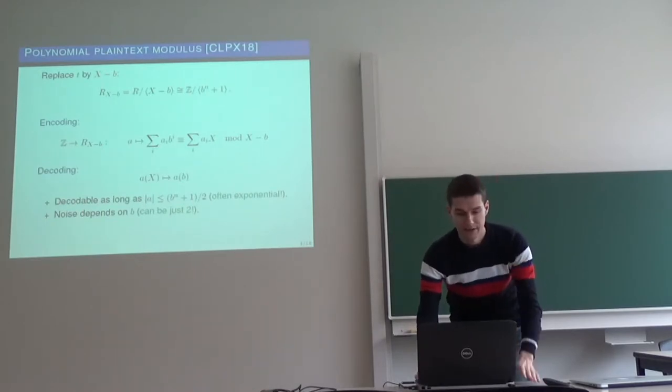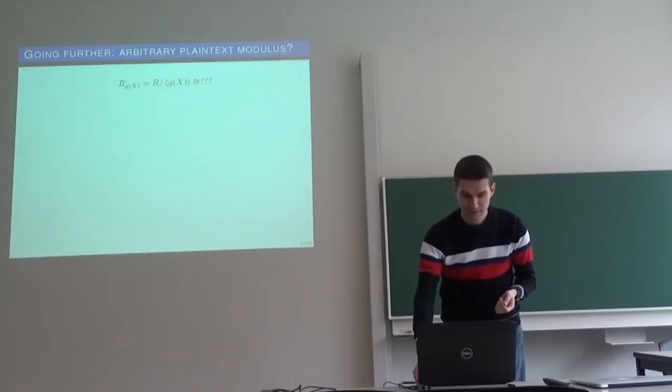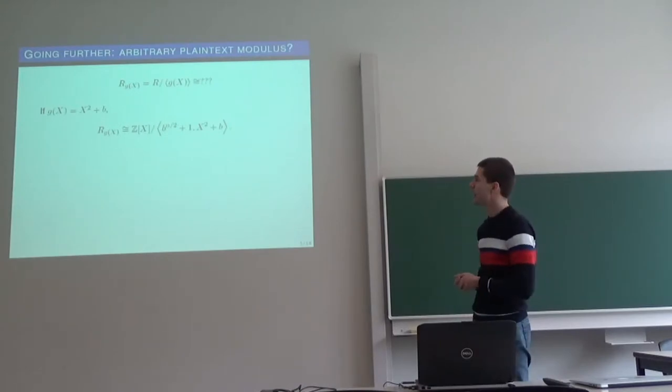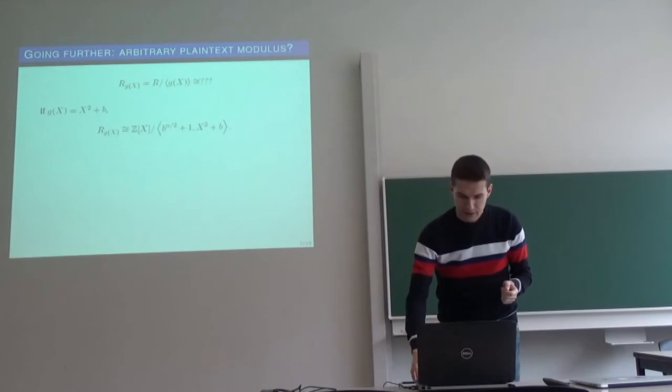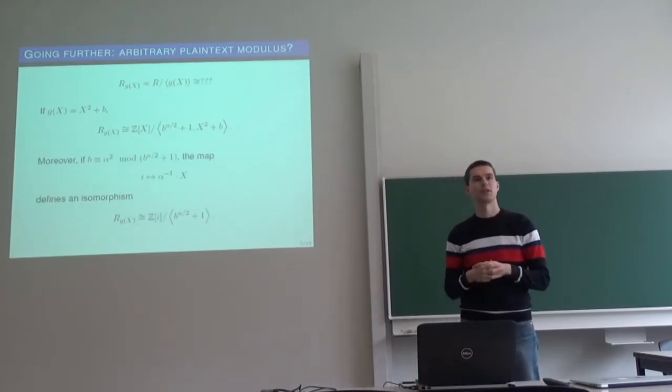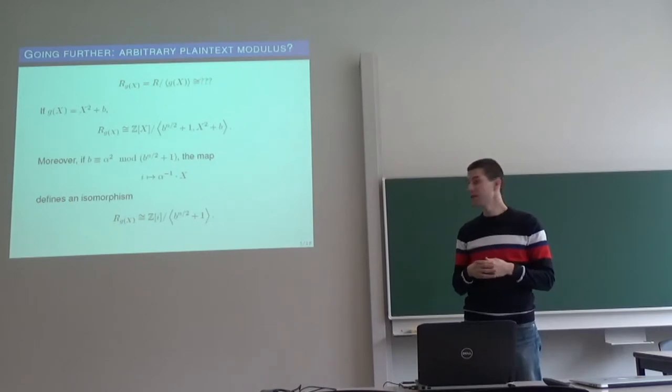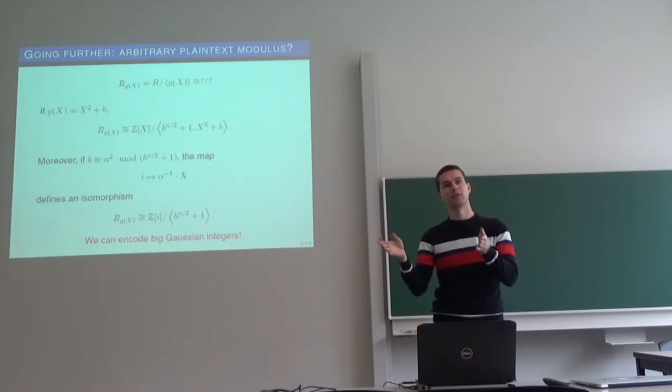So this idea can be generalized, and essentially our assumption was to take other polynomials and consider plaintext spaces that we get. So the very naive choice was in beginning to take x squared plus b. So in this case, we have that our plaintext space will be isomorphic to a bunch of linear polynomials with also very big coefficients. And if we have that this number b is also a square modulo b^(n/2) plus 1, then we can send imaginary i to the plaintext space, to some polynomial, and in this way we can encode Gaussian integers. So complex numbers with integer coefficients, which are of course bounded by this number b^(n/2) plus 1.